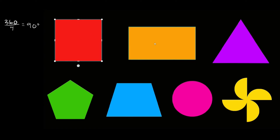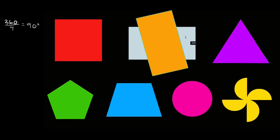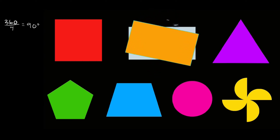Now for something like this rectangle — this is not a regular polygon, because all the sides are not the same length. So when we rotate it, you're going to notice if I rotate this thing 90 degrees, it's not going to map onto itself at all. So what we have to do is rotate it another 90 degrees — a total of 180 degrees. So this rectangle does have rotational symmetry, because we were able to map it back onto itself by a rotation of 180 degrees or less. The angle of rotation for this rectangle would be 180 degrees.